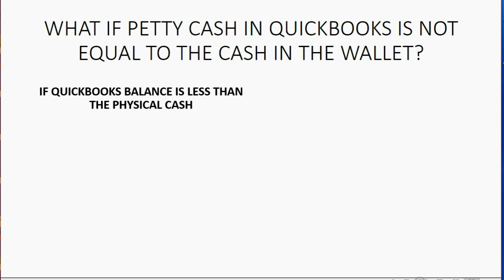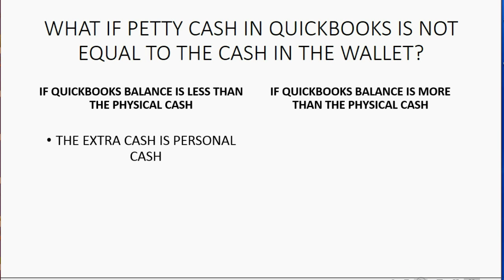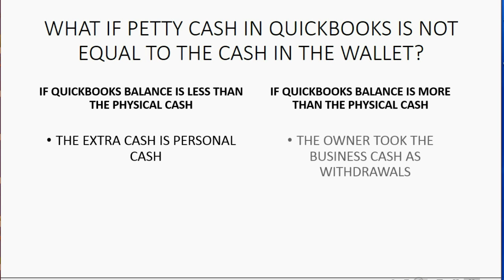There are only two possibilities. If the QuickBooks balance of Petty Cash is less than the physical cash in the wallet, it means the extra cash is personal cash for non-business. But if the opposite is true — if the QuickBooks balance is more than the physical cash in the owner's wallet — then the owner took the business cash as withdrawals.